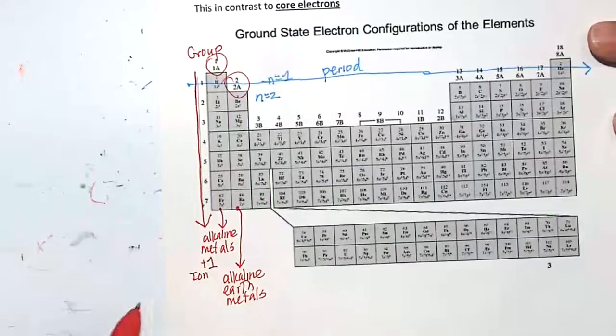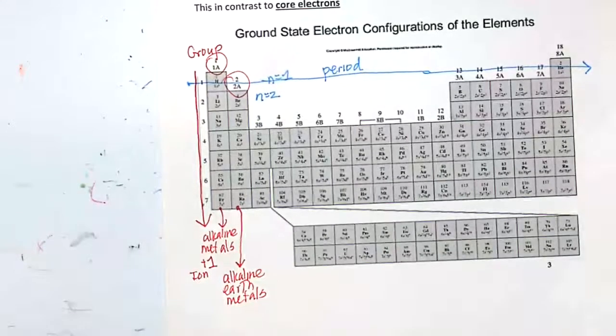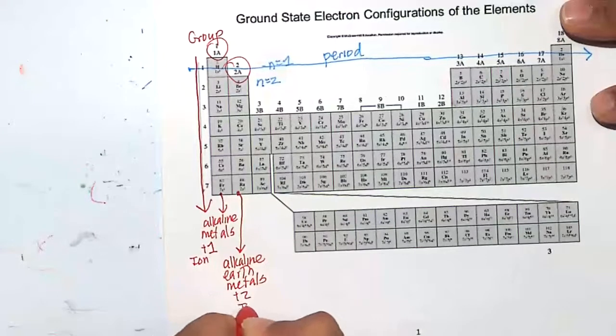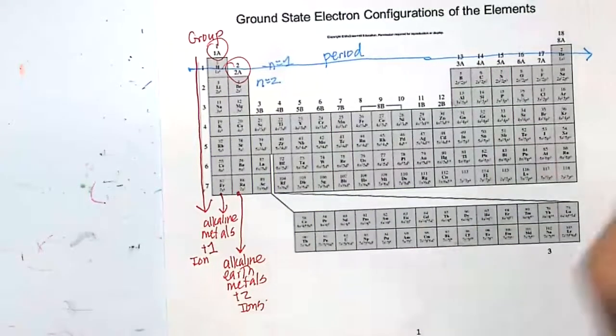Does anybody know what type of ions they would like to be? Plus two ions, very good. These would like to be plus two ions. I'm talking about group 2 or group 2A of the periodic table.